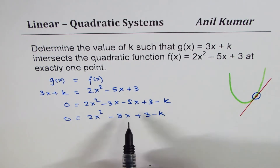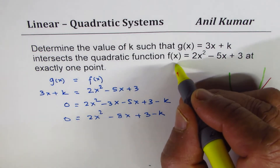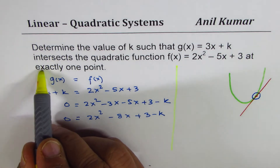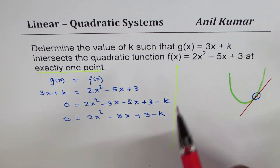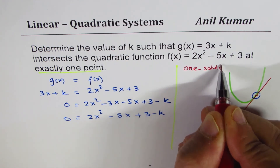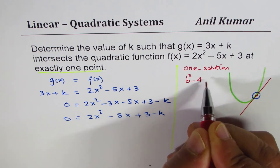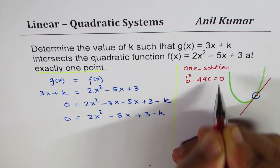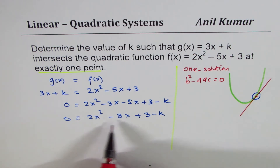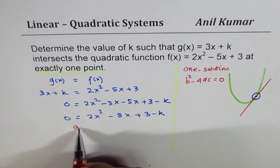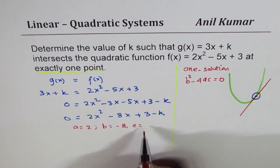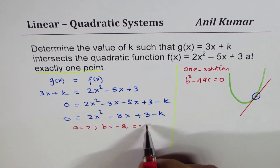Since we need exactly one point of intersection, we need one solution. The condition for one solution is that the discriminant b² - 4ac equals zero. In our equation 2x² - 8x + (3 - k) = 0, we identify: a = 2, b = -8, and c = 3 - k.